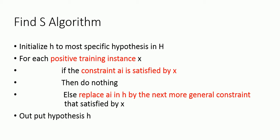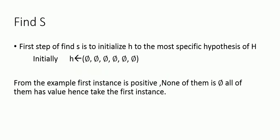The first step is to initialize h to the most specific hypothesis. Initially h is null, so all attributes are given null values. From the given examples, the first instance is positive, and none of the attributes are null — the first instance has values for all attributes.